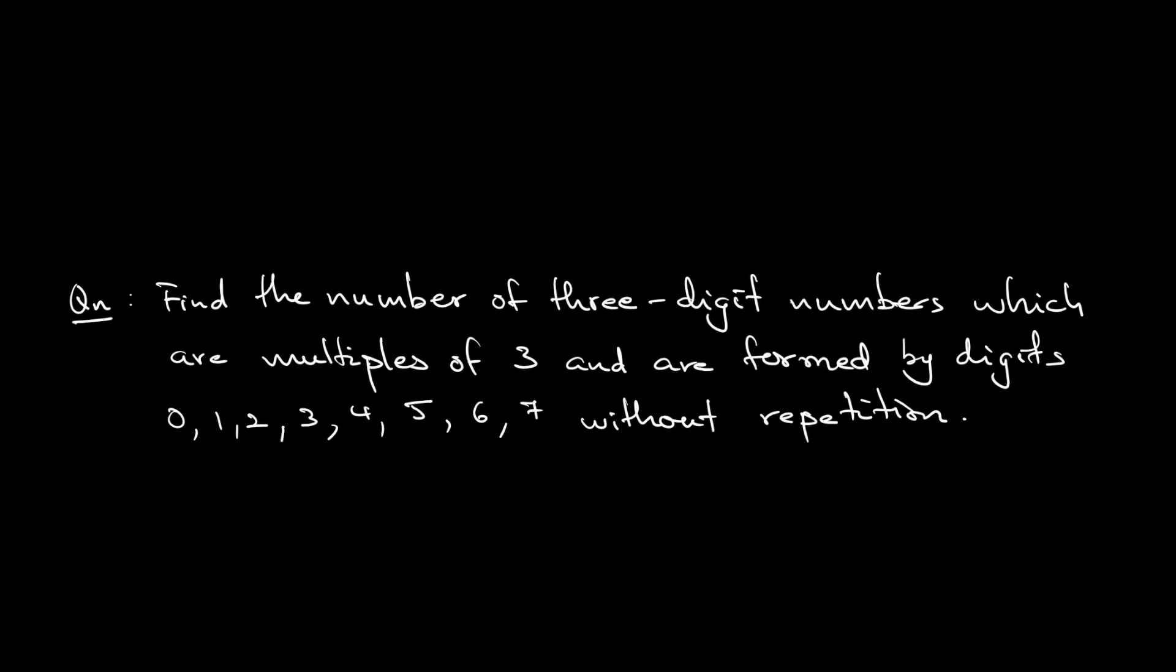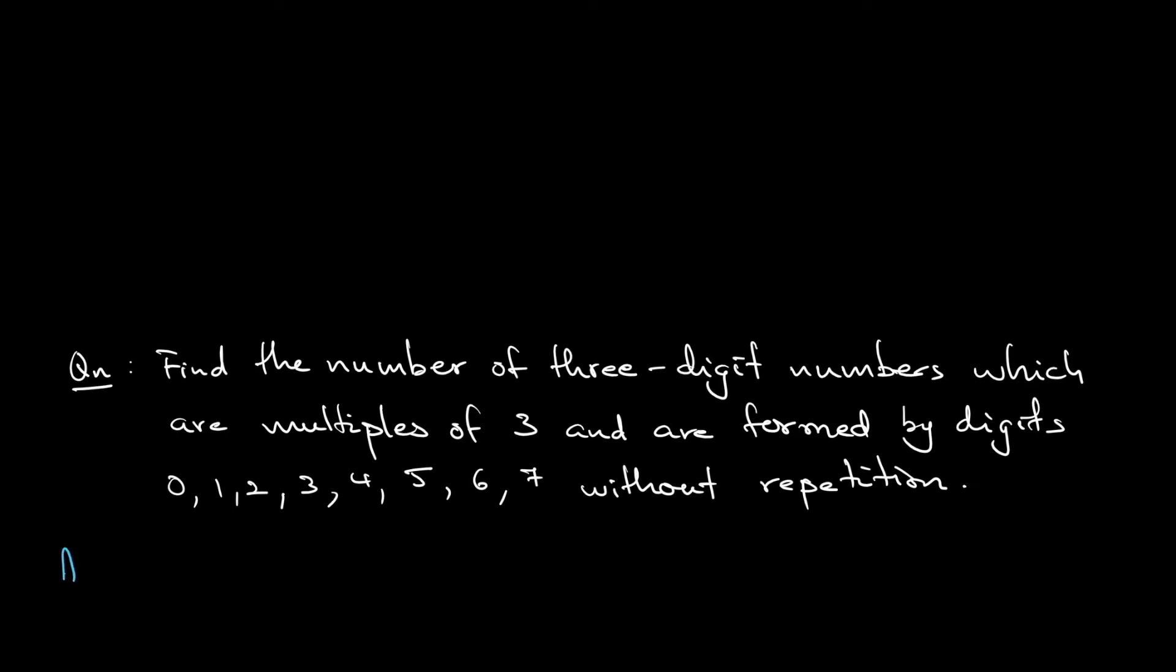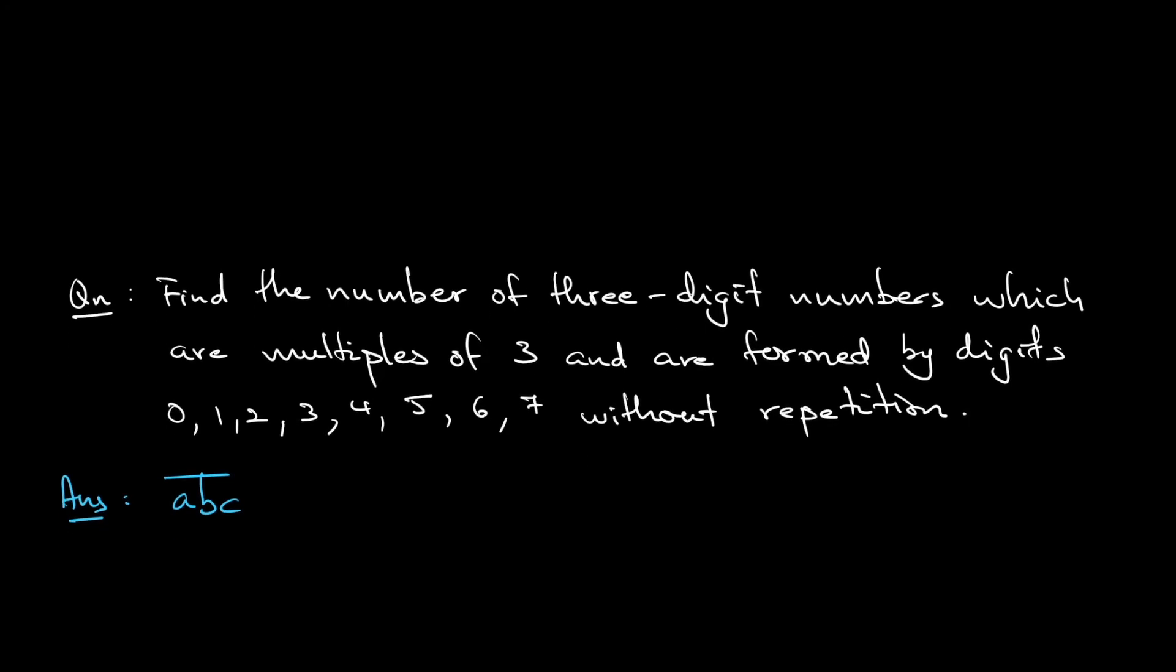Let's try to do this combinatorics question together. First things first, let the number be a, b, c. This is the decimal representation. If you want the integer to be a multiple of 3, that means that the sum of the digits is a multiple of 3. So a plus b plus c is a multiple of 3.